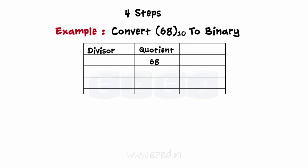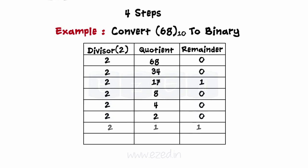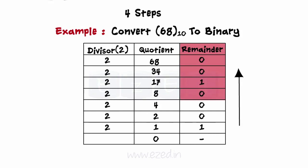Step 1: Divide the decimal number by the base. In the case of binary, divide by 2. Step 2: Indicate the remainder to the right. Step 3: Continue dividing into each quotient and indicating the remainder, until the divide operation produces a zero quotient. Step 4: The base 2 number is the numeric remainder reading from the last division to the first. If you start at the bottom, the answer will read from top to bottom.